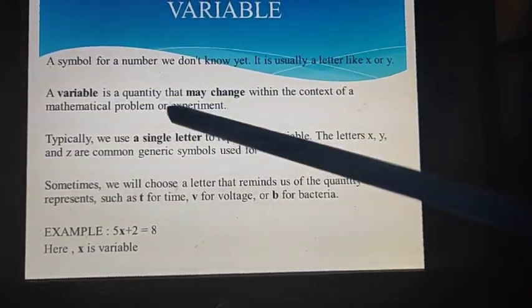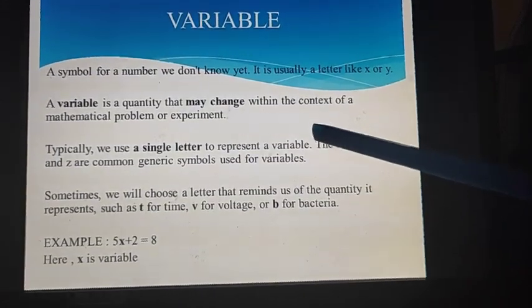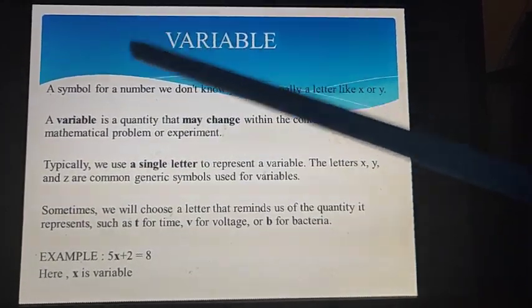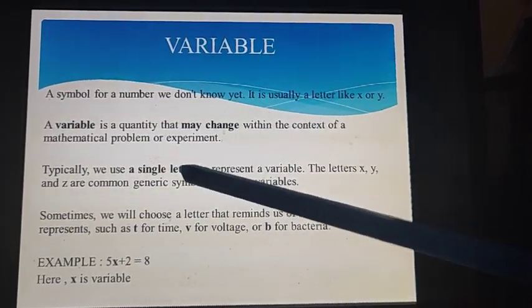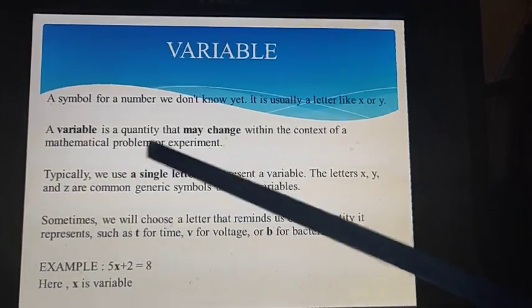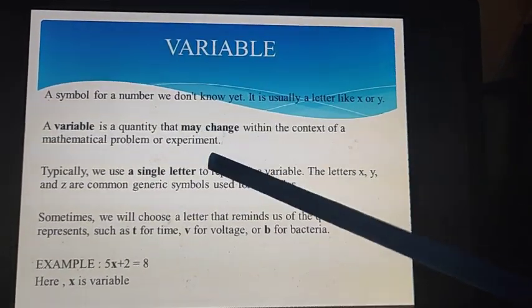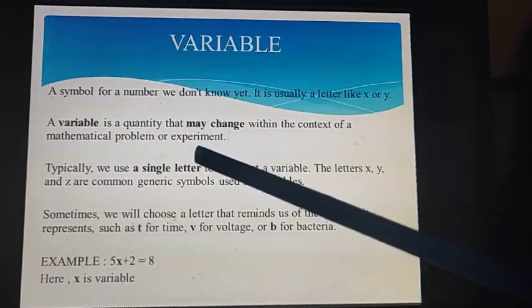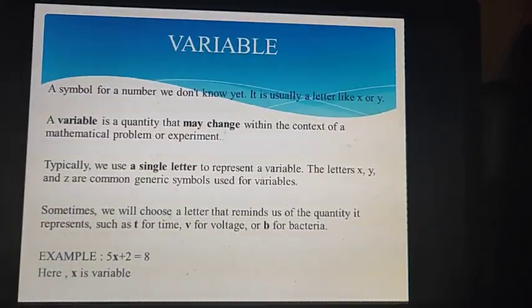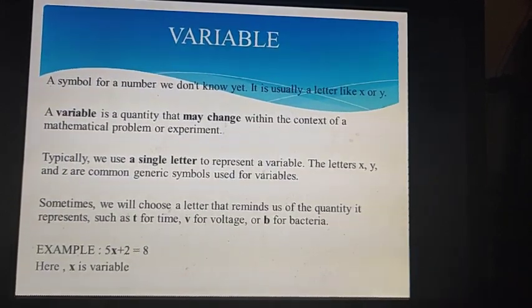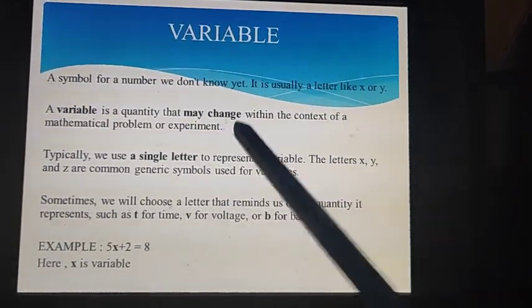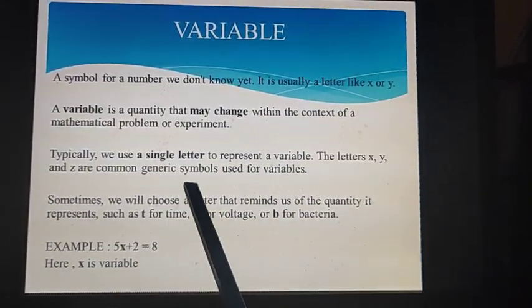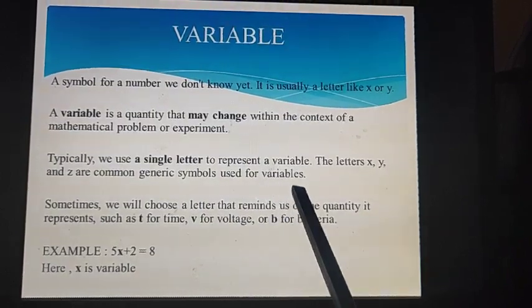A variable is a quantity that may change within the context of a mathematical problem or experiment. In whatever operations we are carrying out in maths, the variable is the quantity which is changing. It does not have a fixed value. That is why it is called a variable. Typically we use a single letter to represent a variable. The letters x, y, and z are common generic symbols used for variables.